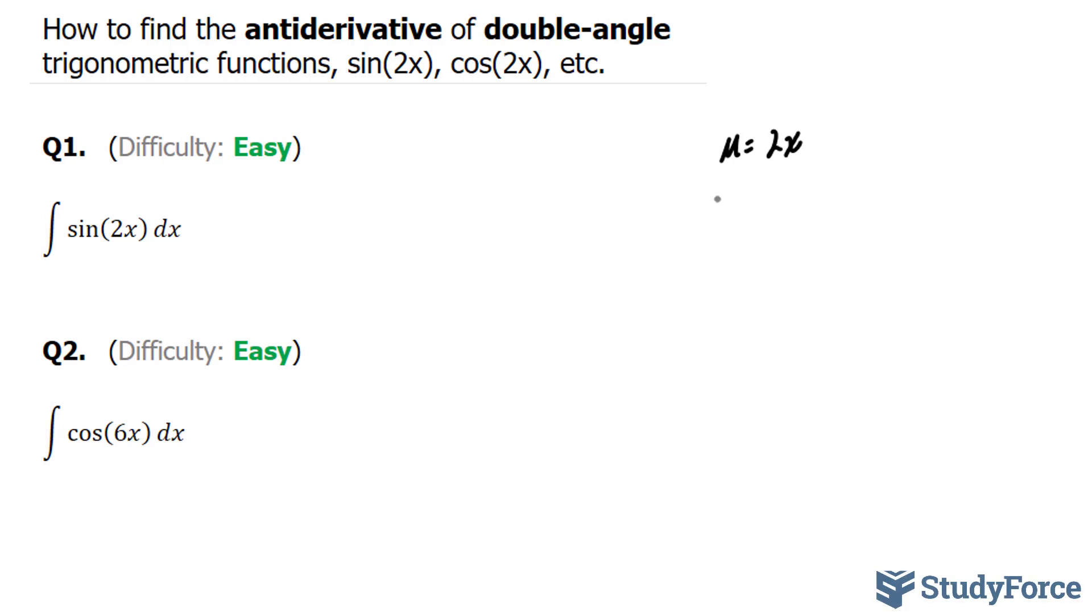We'll take the derivative, where we end up with du is equal to 2 dx, and we'll solve for dx, where we have dx is equal to half du. Essentially, what I did is I divided both sides by 2, giving us half du.